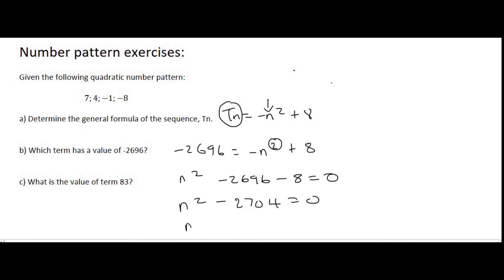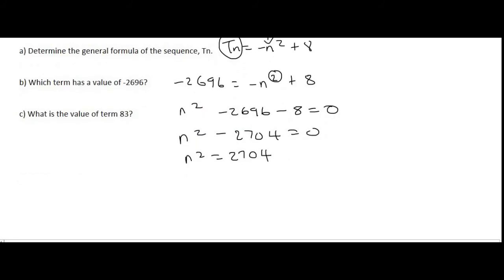And then with these kind of quadratics where the middle term isn't there, it usually makes things easier if we just take the 2704 back to the other side. And then we take the square root. And remember, when you take the square root, the correct way is to always say plus minus square root of 2704.